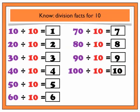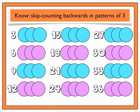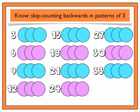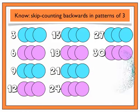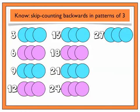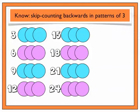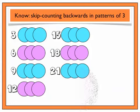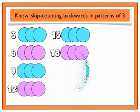Finally, let's take a look at the new piece of knowledge for this video: skip counting backwards in a pattern of 3. Count with me as these counters disappear in groups of 3. We will start at 36. Here we go. 36, 33, 30, 27, 24, 21, 18,